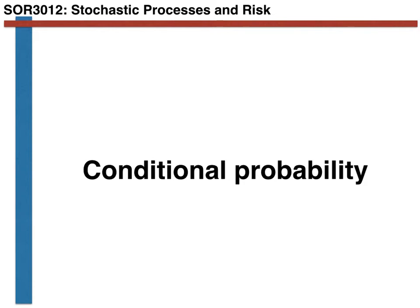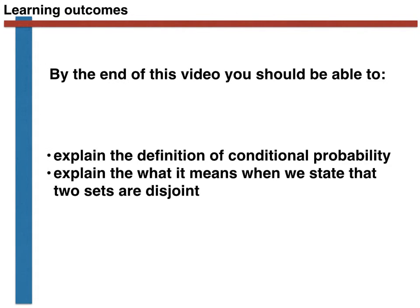Without further ado, let's introduce our learning outcomes, which are that we want you to be able to explain the definition of conditional probability, and we want you to be able to explain what it means when we state that two sets are disjoint.